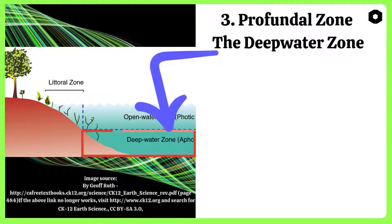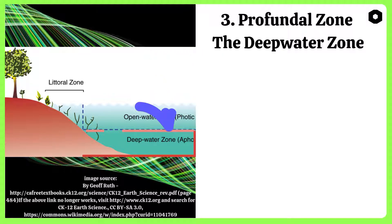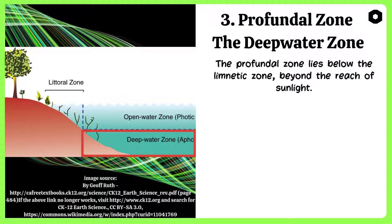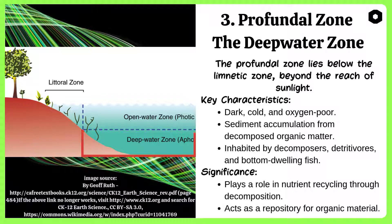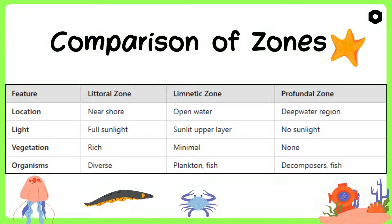The last zone is the profundal zone — the deep water zone. The profundal zone lies below the limetic zone, beyond the reach of sunlight. It is dark, cold, and oxygen poor. It has sediment accumulation from decomposed organic matter, and is inhabited by decomposers, detritivores, and bottom-dwelling fish. Significance: It plays a role in nutrient recycling through decomposition and acts as a repository for organic material. A comparison of all three zones follows.